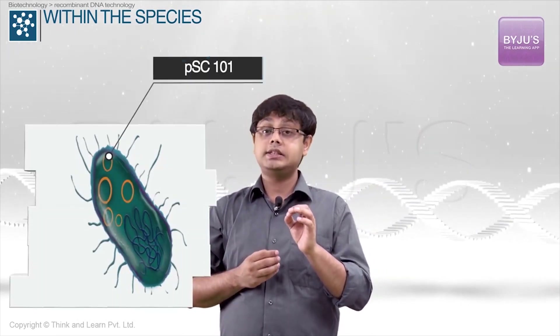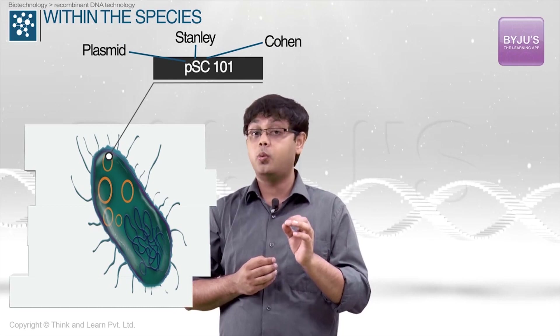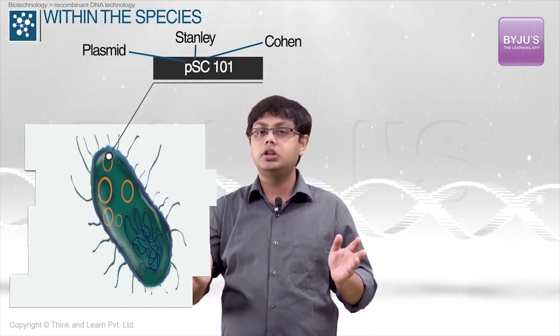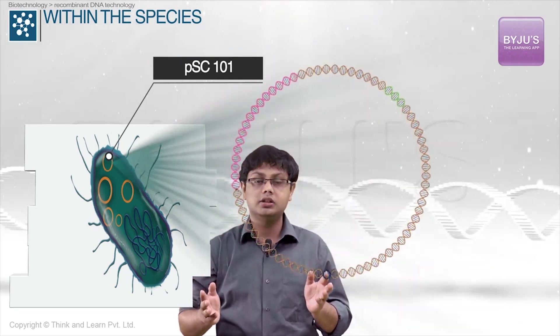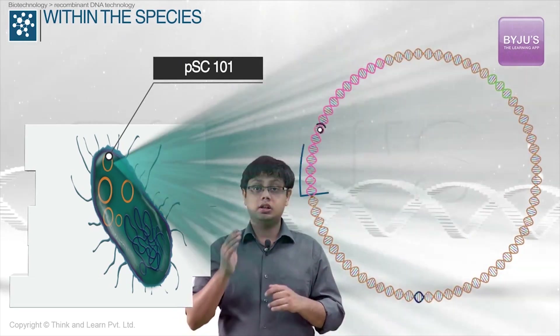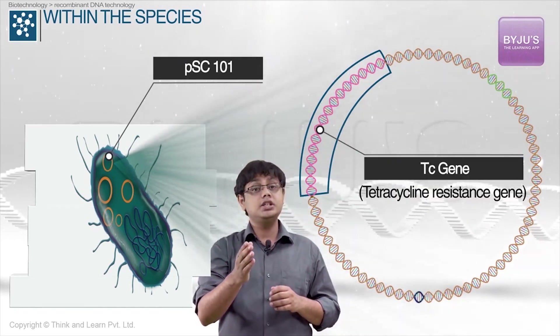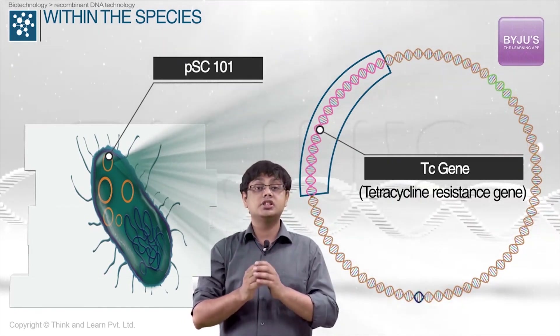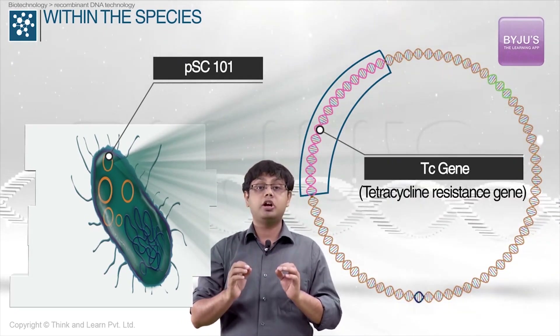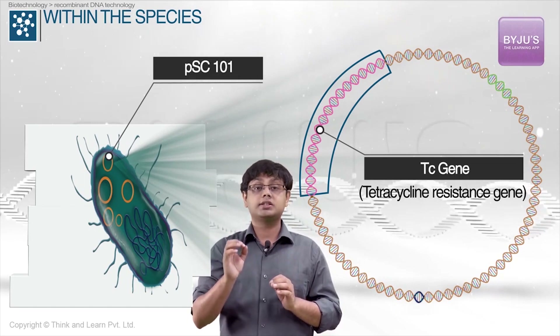Researchers chose a small plasmid named after Cohen's initials, PSC-101, which occurs naturally in large quantities in bacterial cells. This plasmid carries the TC gene that confers resistance to antibiotic tetracycline.